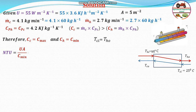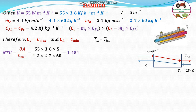Next, we find the NTU — the Number of Transfer Units. NTU = U × A / C_min. Substituting: U = 55 × 3.6, A = 5, and C_min = 4.2 × 2.7 × 60. Calculating these values together gives NTU = 1.454.